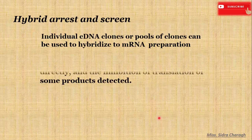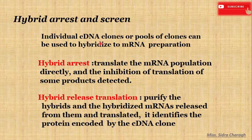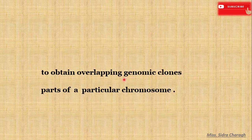Next is hybrid arrest and release. Individual cDNA or pools of clones can be used to hybridize to a messenger RNA preparation. In hybrid arrest, we translate the messenger RNA population directly, and the inhibition of translation of some product is detected. In hybrid release translation, we purify the hybrid, the hybridized messenger RNA is released from them and translated, and this identifies the protein encoded by the cDNA clone.